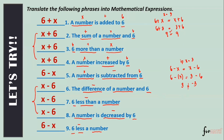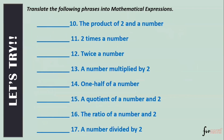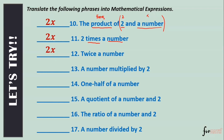Number ten: 'The product of two and a number.' Product means multiplication. We avoid using x as the multiplication symbol since our variable is x. The product of two and a number is 2x. You don't need to write parentheses or a times symbol — 2x is fine. Number eleven: 'Two times a number' — also 2x. Number twelve: 'Twice a number' — also 2x.